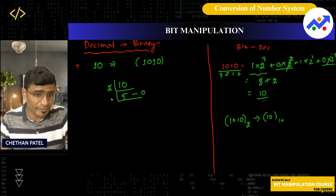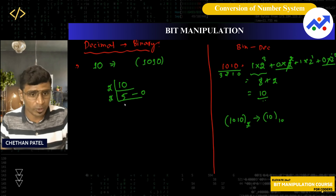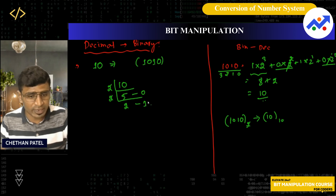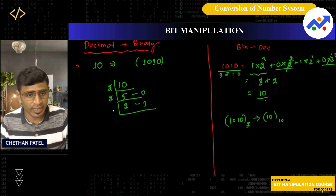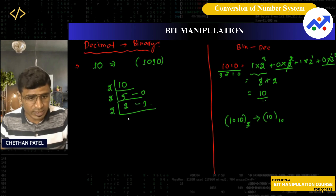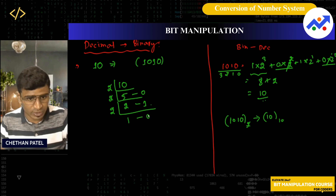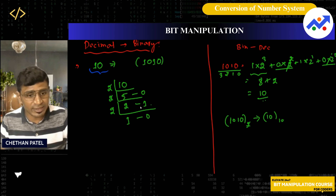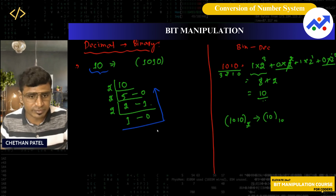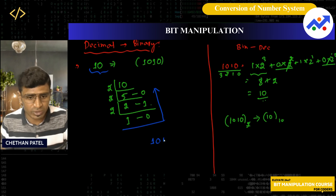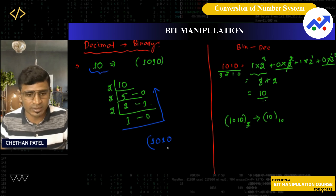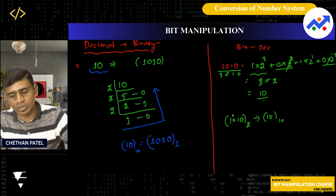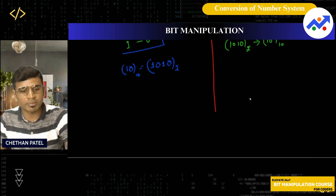Next, I divide 5 by 2: two twos are four, so I get 1 as the remainder — note that down. Then divide 2 by 2: two ones are two, and I get 0 as the remainder. Now the binary equivalent of 10 is read from bottom to top: 1010. This is the binary equivalent of 10 in base 10. You can do the same for any other number.